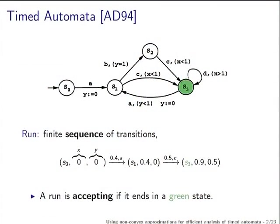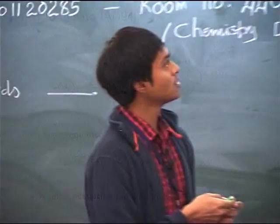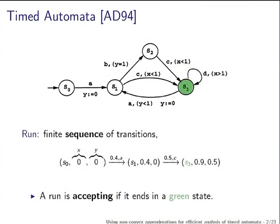Because this is an automaton there should be edges between states. On the edges you have an action and additionally you can have a constraint over clocks. For example, this constraint says that if the automaton is in state S1, it can take this transition only if the value of X at that time is less than 1.